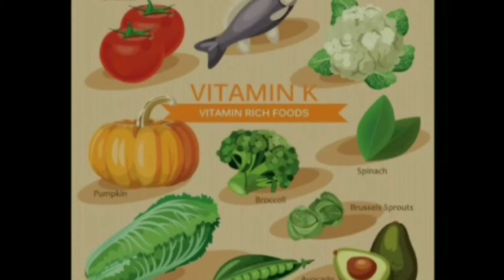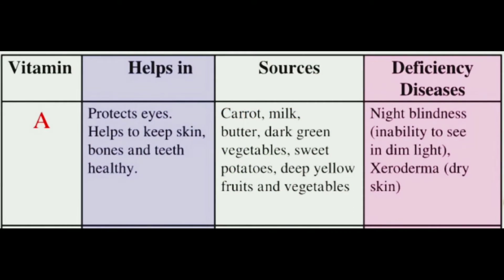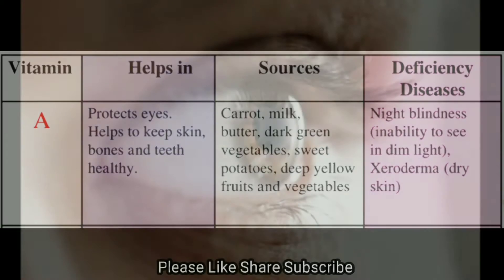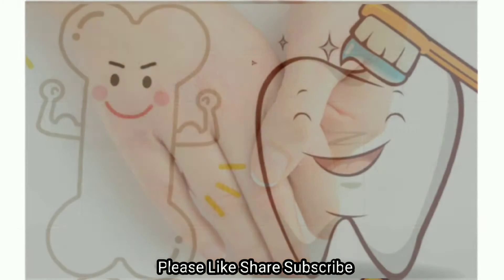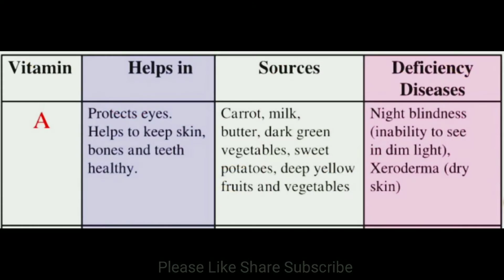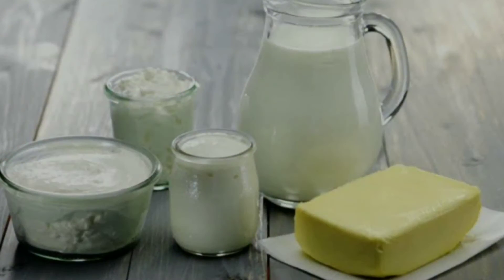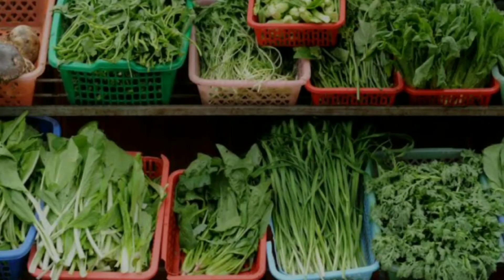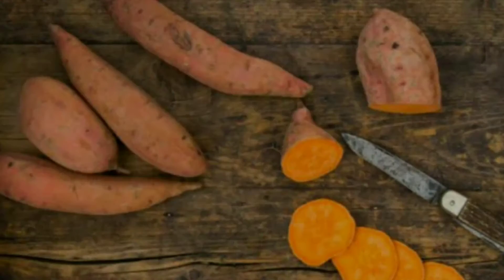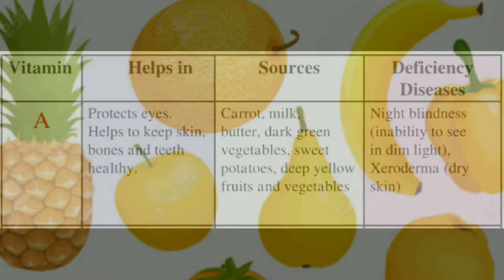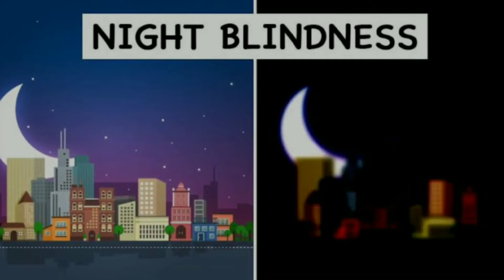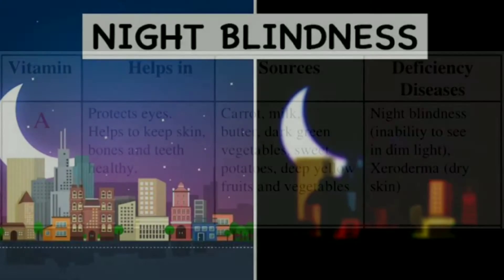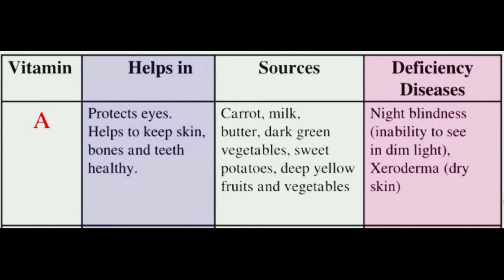Vitamin A helps in protection of the eyes and helps to keep skin, bones, and teeth healthy. Sources: carrot, milk, butter, dark green vegetables, sweet potatoes, deep yellow fruits and vegetables. Deficiency diseases: night blindness — that is, inability to see in dim light — and xeroderma, that is, dry skin.